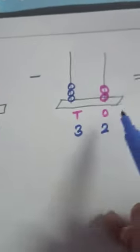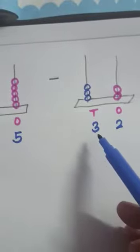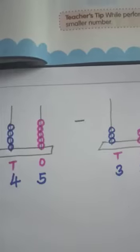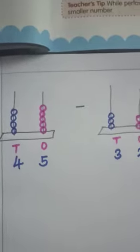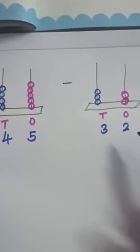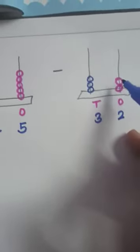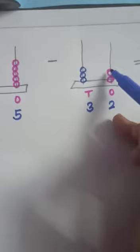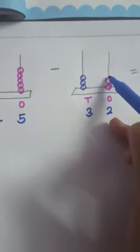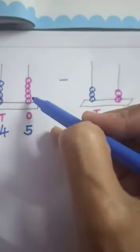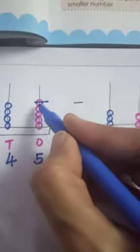Now, we have to subtract 32 from 45. So, first we will subtract the numbers which are on one's place. So I am subtracting the numbers on one's place first. Take or subtract these two beads from this: 1, 2.